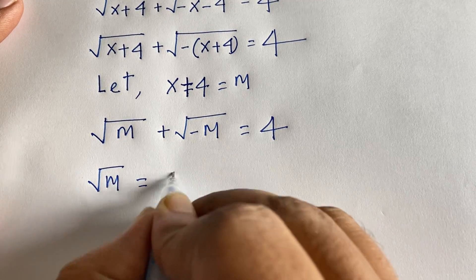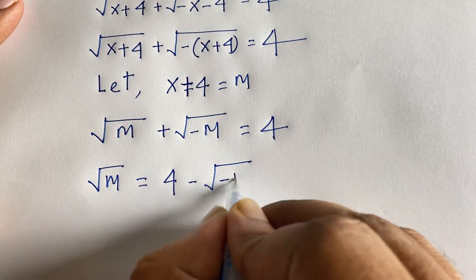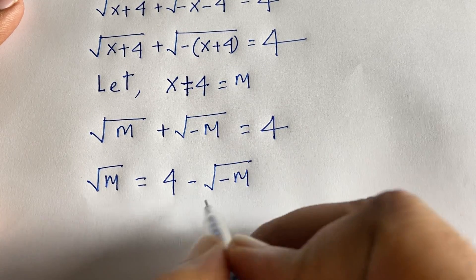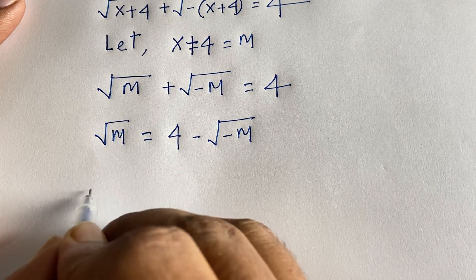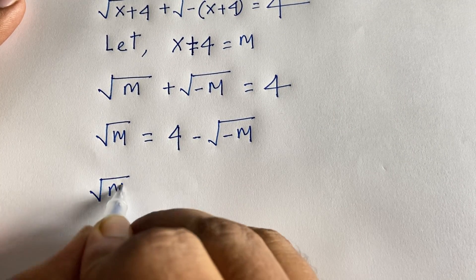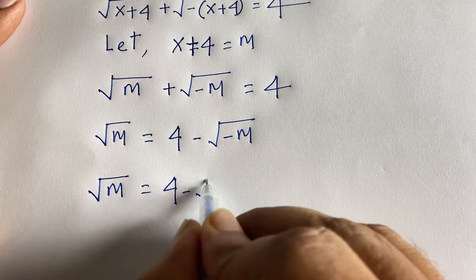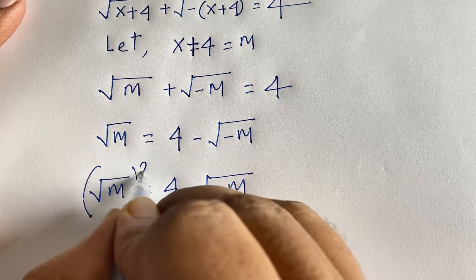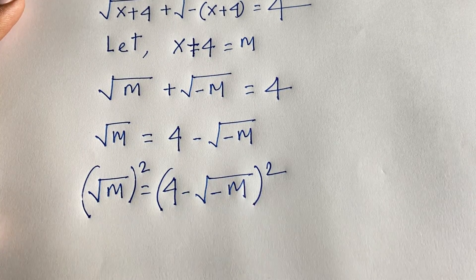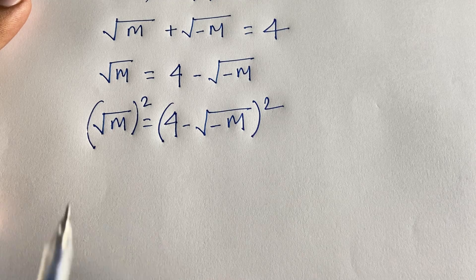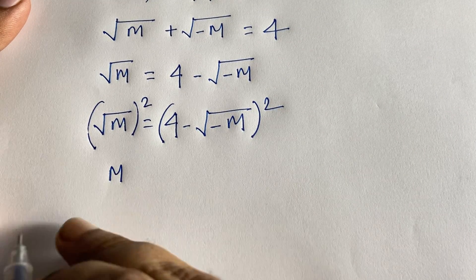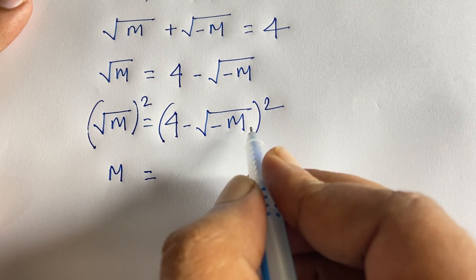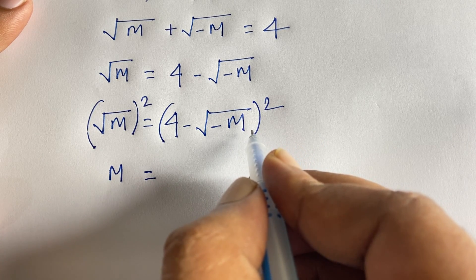Now I rearrange: √m = 4 minus √(-m). I move the positive √(-m) to the other side, making it negative. Then I square both sides. The square root on the left cancels, and I find m equals (4 minus √(-m))² — expanding as a (a-b)² identity: a² minus 2ab plus b².